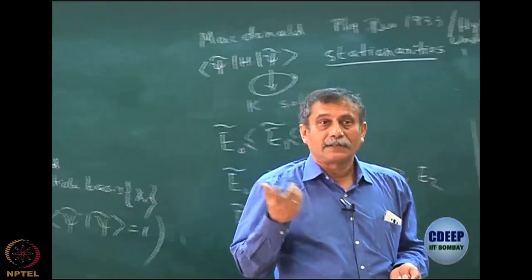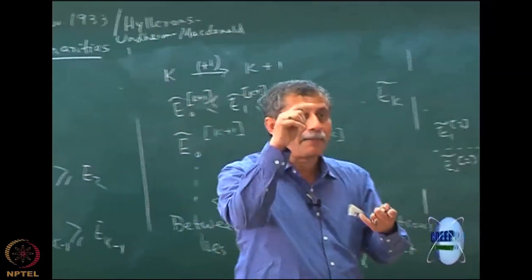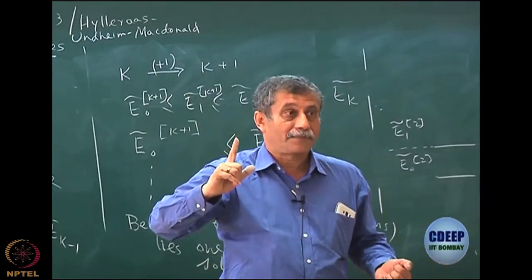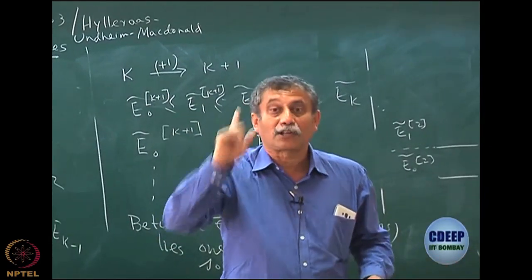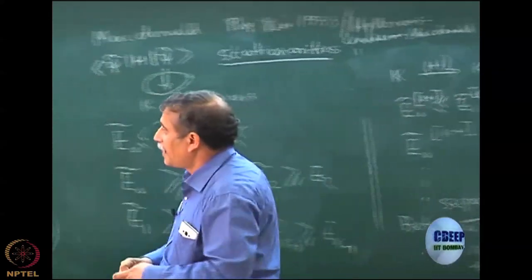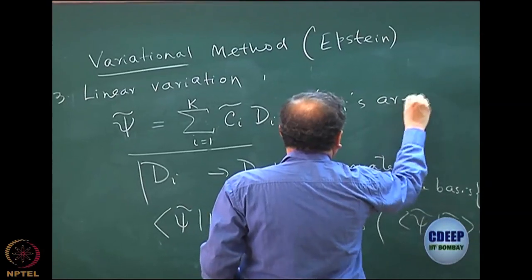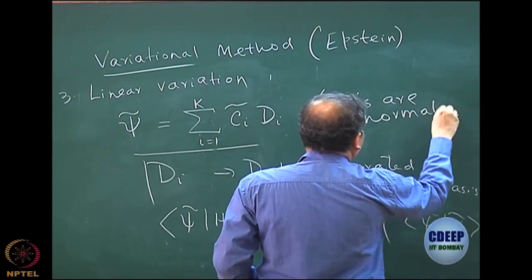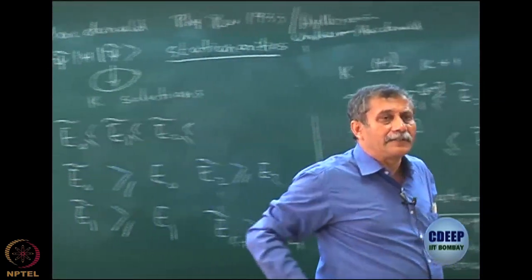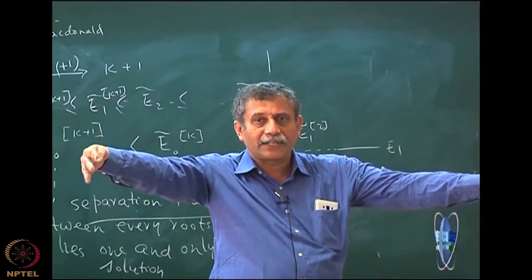Many problems use linear variation. For example, the particle in a box — I just gave an example: C_mn times x^m times (x minus l)^n. That is a linear variation problem. Except that the basis is not normalized. My basis must be normalized. So it will not be an exact eigenvalue equation there — there will be some kind of change. But it is not very difficult to renormalize; you can always go to a renormalized orthonormal basis and then do the problem.